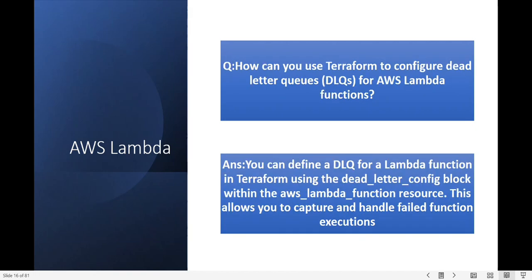How can you use Terraform to configure dead letter queues for an AWS Lambda function? You can define a DLQ for a Lambda function in Terraform using the dead_letter_config block within the AWS Lambda function resource. This allows you to capture and handle failed function executions.